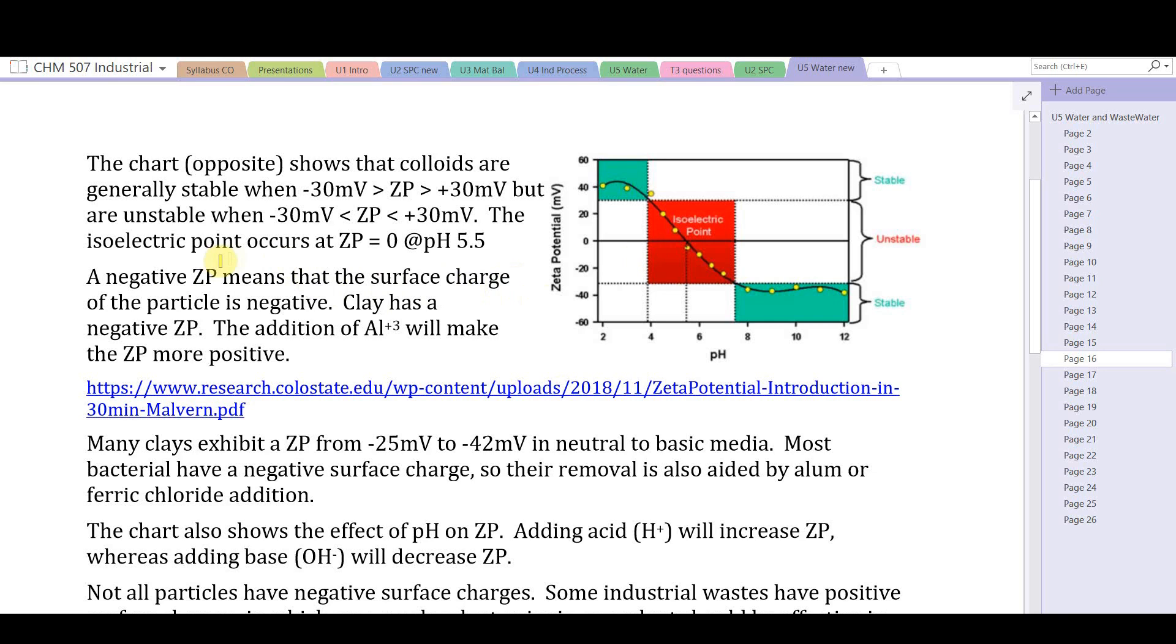A negative zeta potential means that the surface charge of the particle is negative. Clay would have a negative zeta potential. Addition of cations such as aluminum will make the zeta potential more positive and tend to destabilize the suspension, allowing agglomeration and settling.